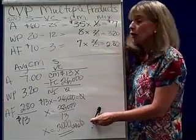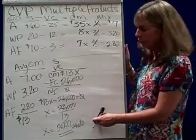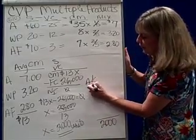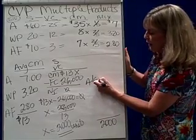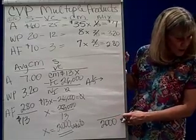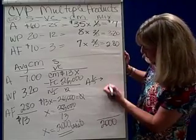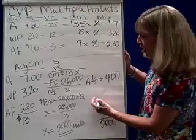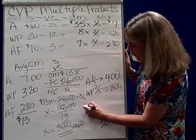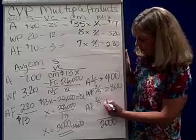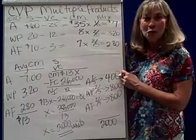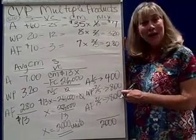How many of those units are aquariums, how many are water pumps, and how many are air filters? What I'm going to do is take those 2,000 units, and I know aquariums are going to be one-fifth. One-fifth of 2,000 is 400 units, or 400 aquariums. As far as water pumps, they're going to be two-fifths, which is 800, and air filters is another two-fifths of 2,000 units, so that's 800. At break even, you need to sell at least 400 aquariums, 800 water pumps, and 800 air filters.